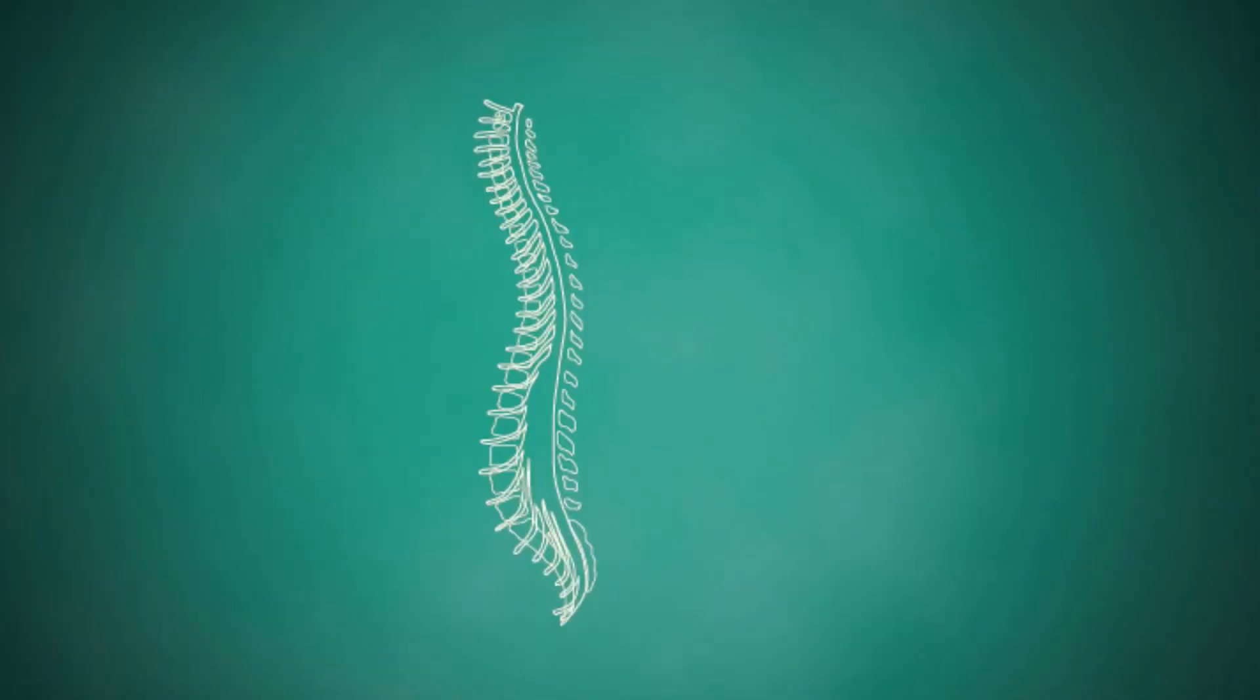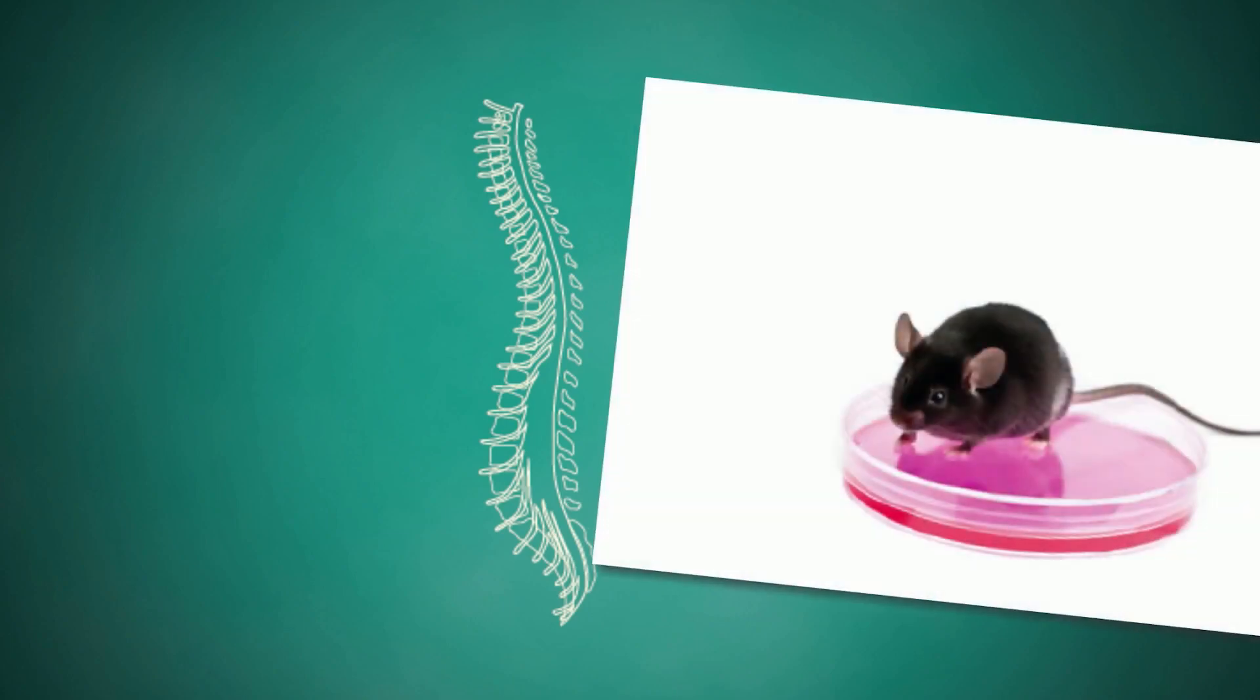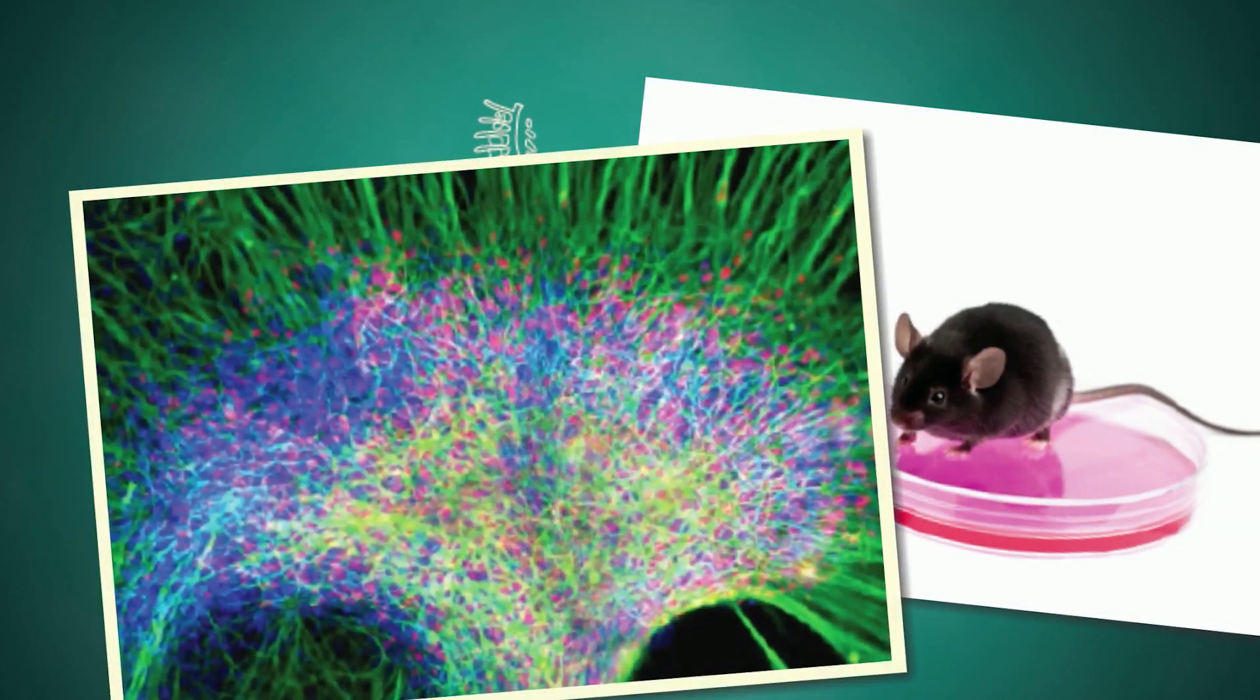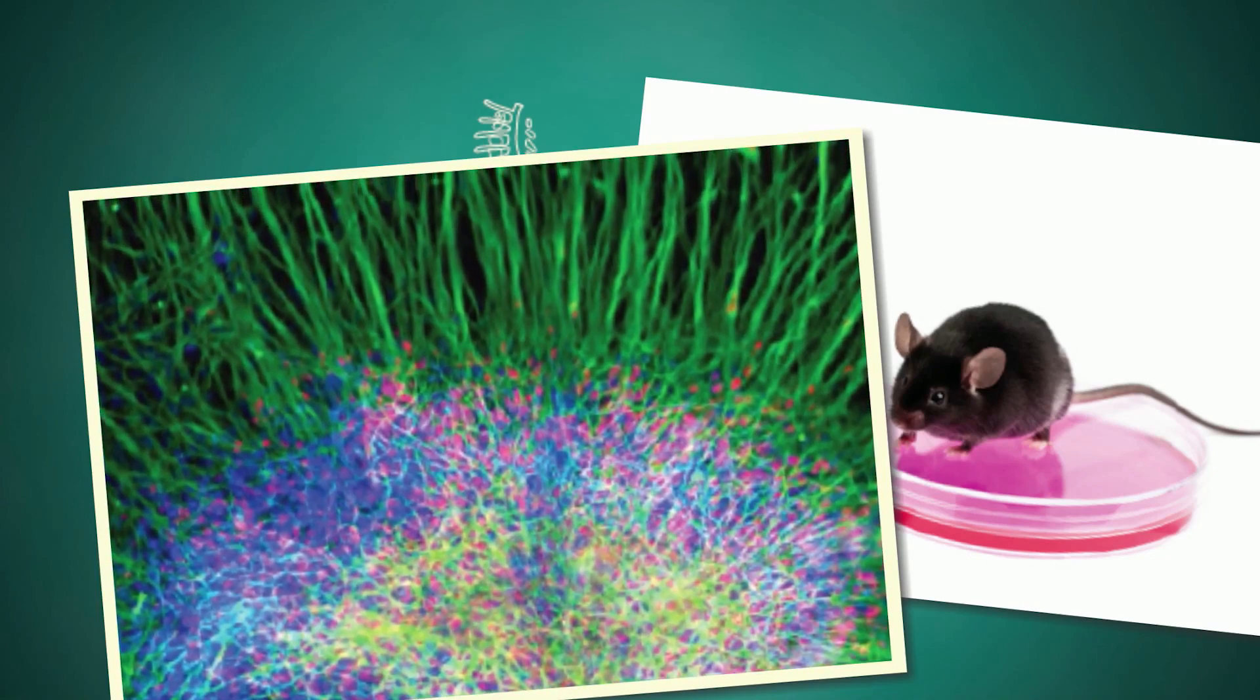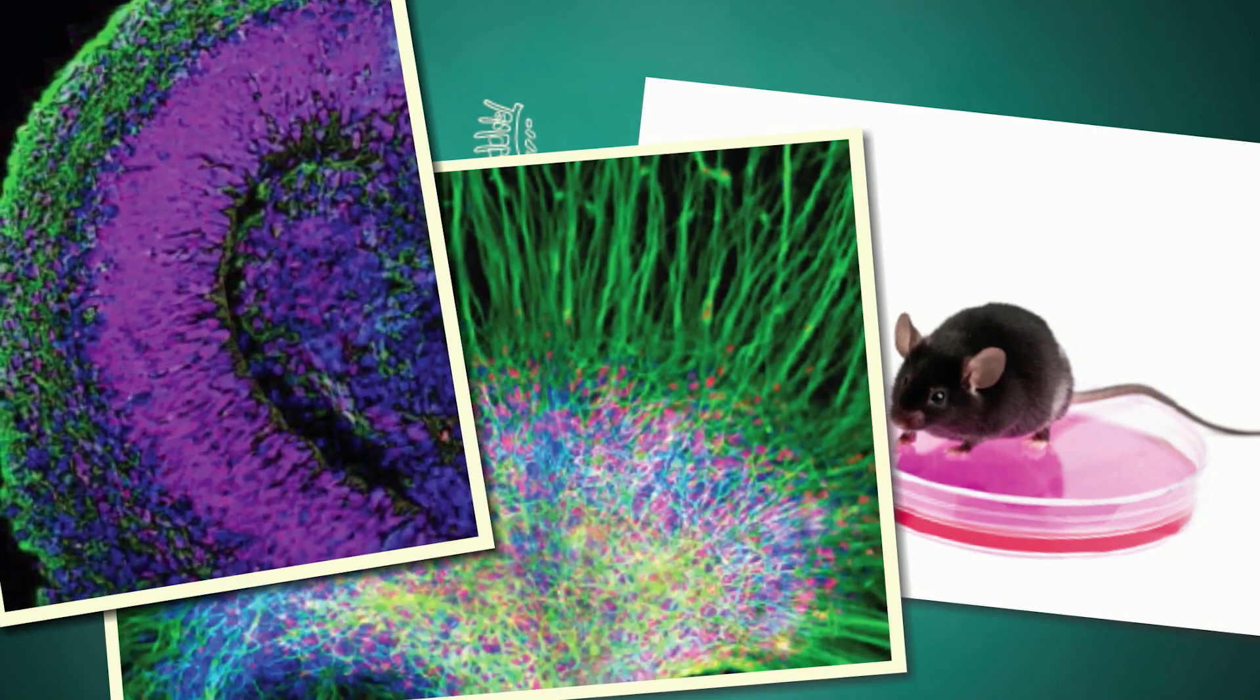Stem cell transplants show promise for treating spinal cord injuries. In rats, neural stem cells were injected into damaged spinal cords, where they wrapped around injured nerve cells and improved the rat's ability to walk.